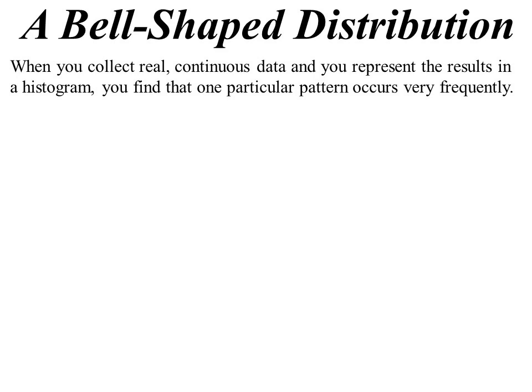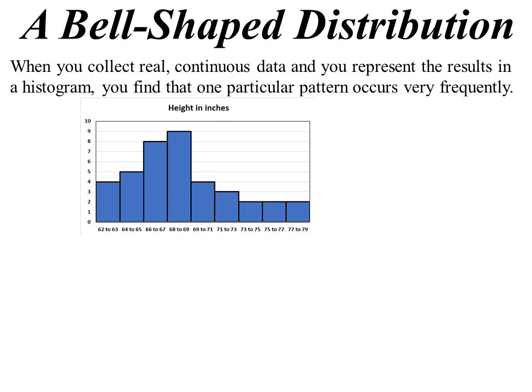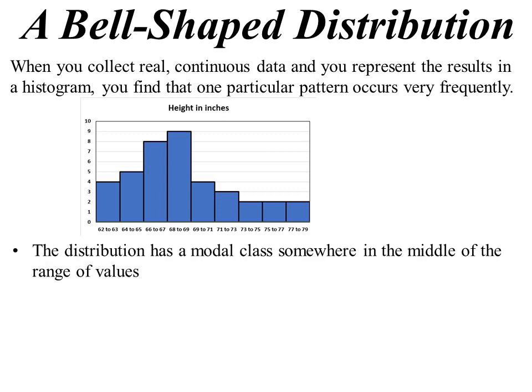The bell-shaped curve, the bell-shaped distribution. It's amazing how often this type of pattern happens when you collect data. Something like this, where you see it going up to a point and then back down again. So this one's just the height in inches, which we've placed in the class group so we can draw up a nice histogram there.